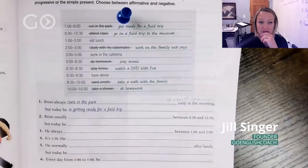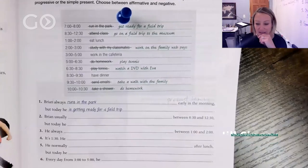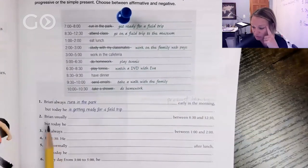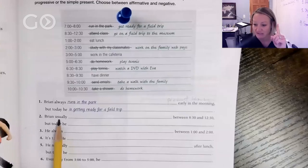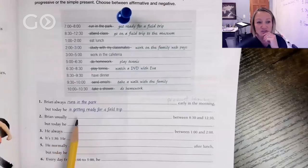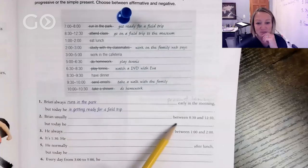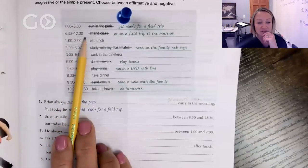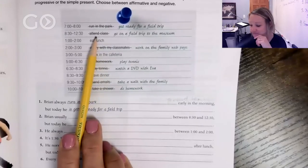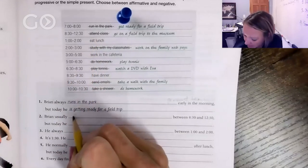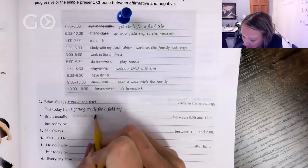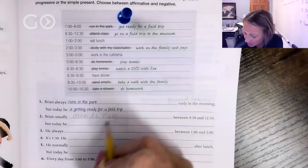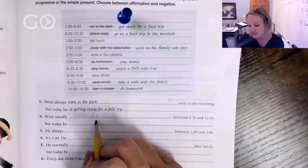Okay let's do this together. Brian is usually blank, so when I see the word usually I know present tense. Brian usually blank between 8:30 and 12:30. So what is he doing at 8:30 to 12:30? He usually attends class.